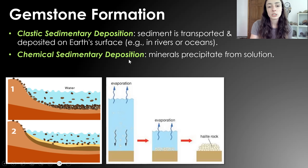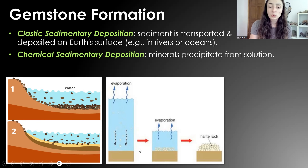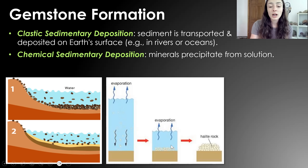Chemical sedimentary deposition is different — it's when minerals precipitate directly from solution. Basically you have water rich in certain ions; for example, if it's rich in sodium and chloride ions, then it evaporates, leaving behind sodium chloride as halite, which is salt — a chemical sedimentary mineral.